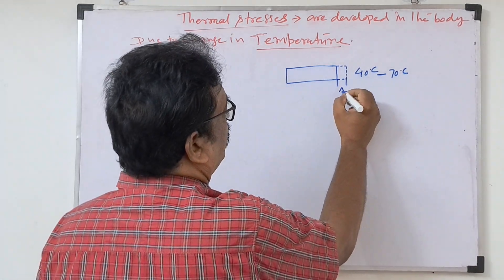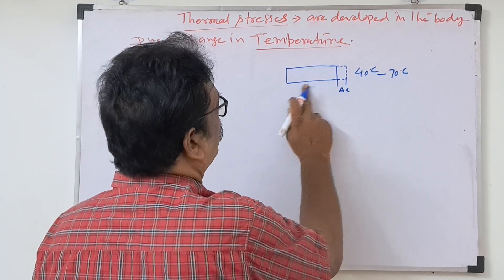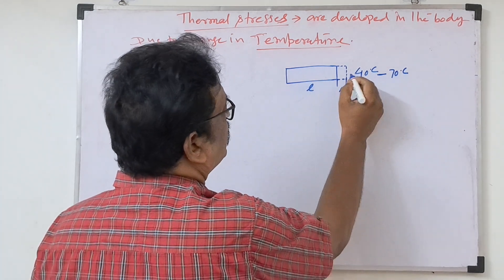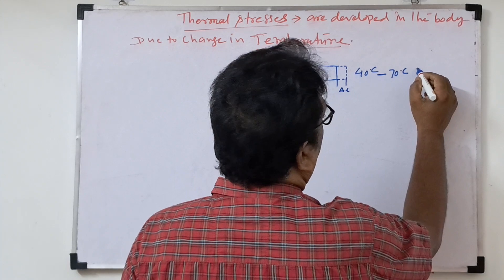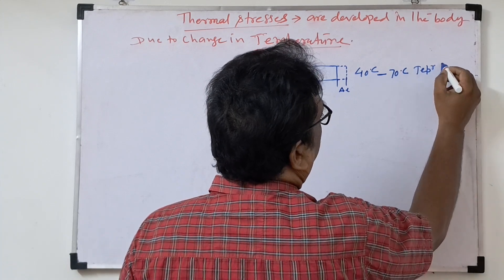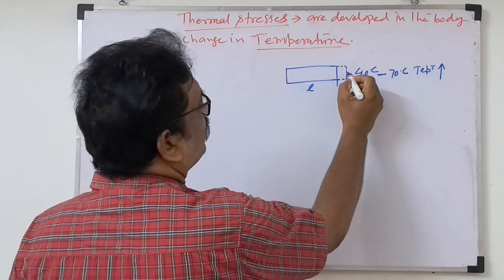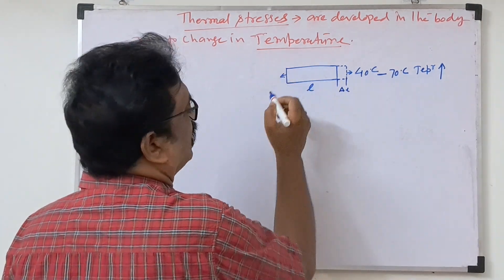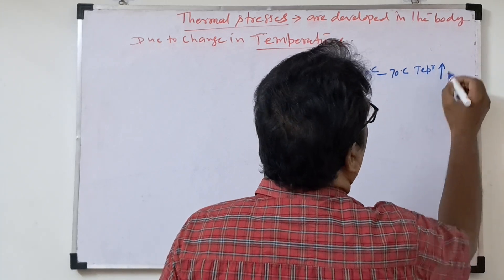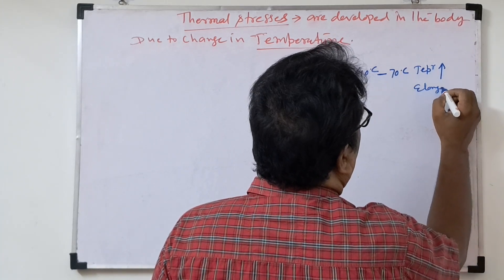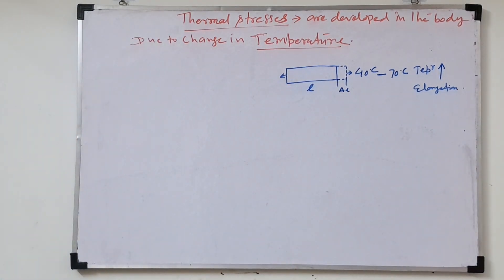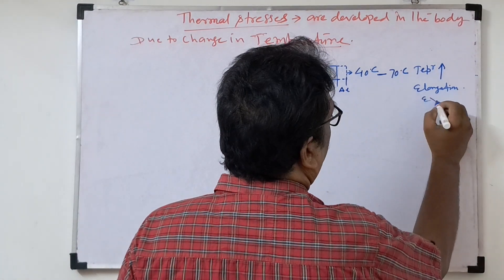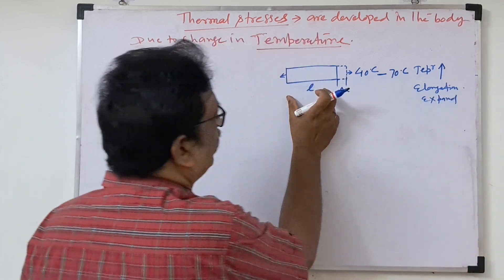This elongation is delta L. Suppose the length is L, then changes of delta L will be there. If temperature rises, elongations will be there in the body — the body will expand due to the change in temperature.